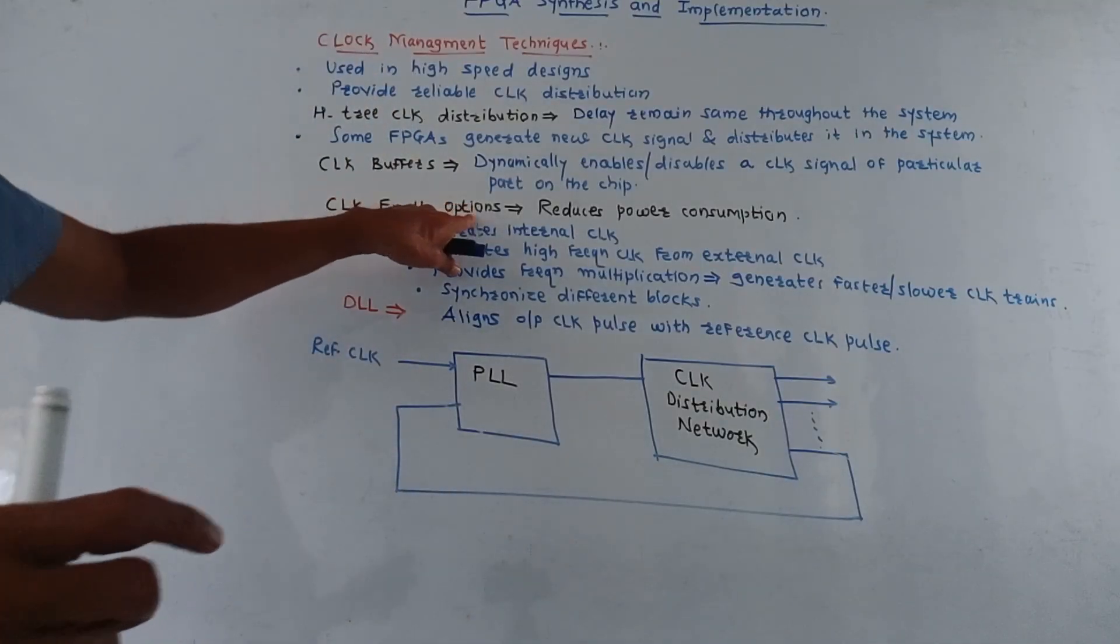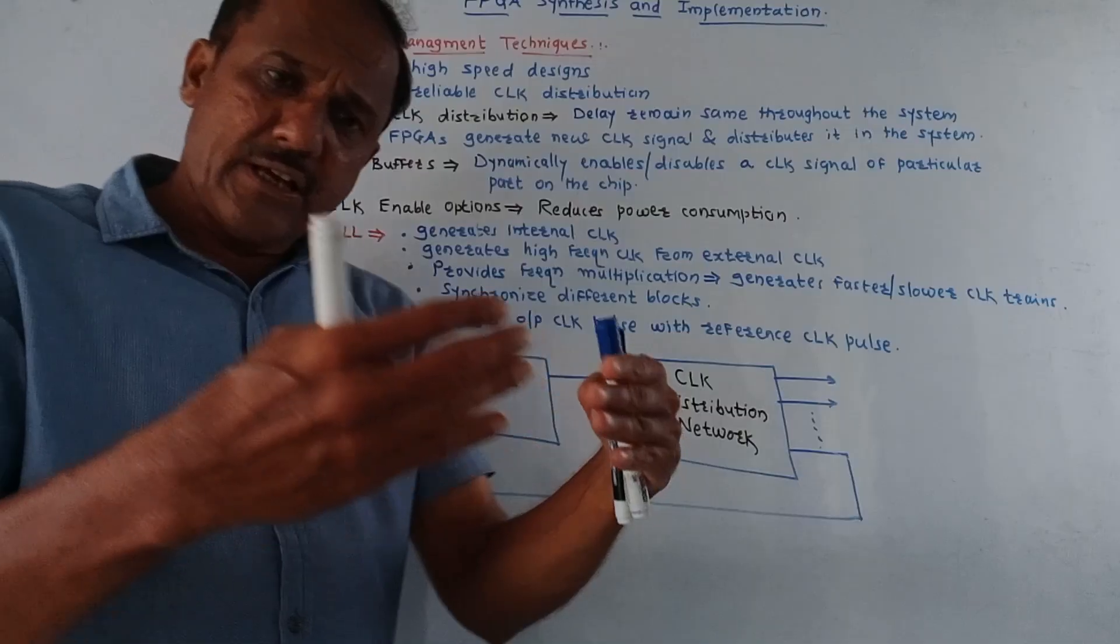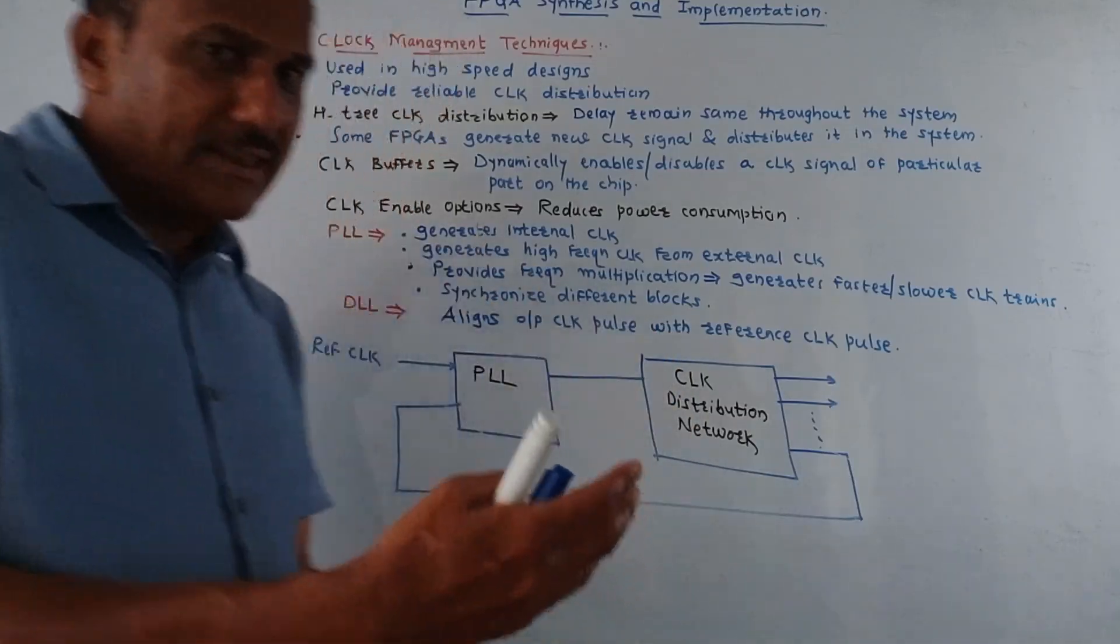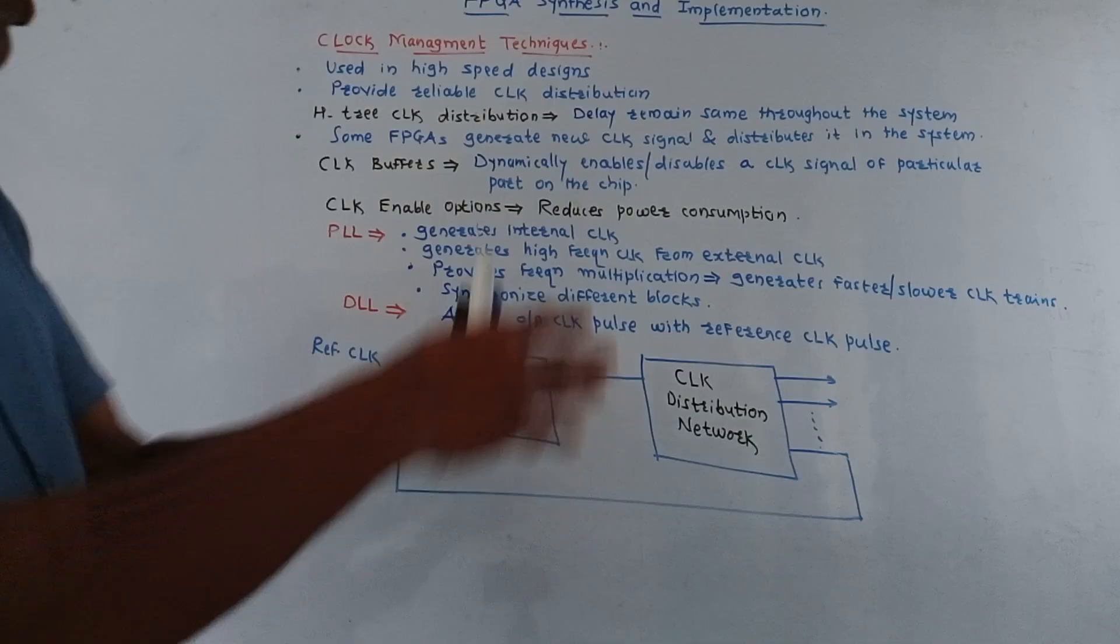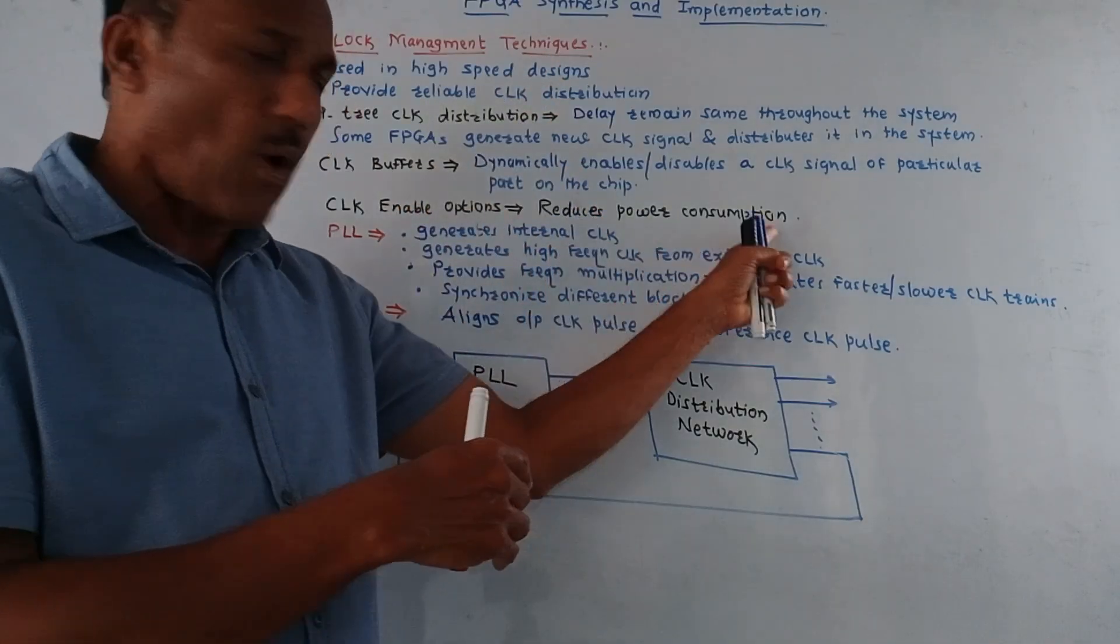There are clock enable options. As the name indicates, using these options we can enable the clock signals or disable the clock signal. So it is used to reduce the power consumption.